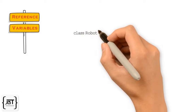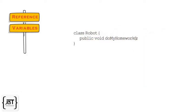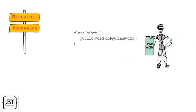Let us consider a class, Robot, that has a method, DoMyHomework. Now, in order to get the robot to do my homework, we will first need to create an object of Robot class, and then call the method DoMyHomework on the object.